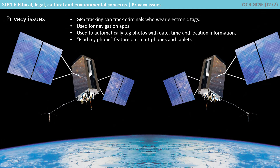Electronic tagging can identify where convicted criminals are with GPS tracking. Black boxes in cars can monitor how people drive for insurance and accident investigation purposes. Mobile phone signals can be tracked, which also allows technology such as Find My iPhone to enable you to find a lost phone or tablet.